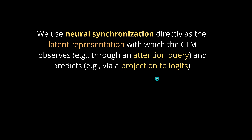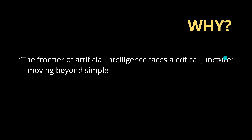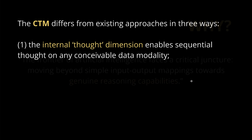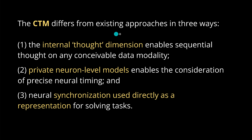Why do we need this? The authors say the frontier of AI faces a critical juncture — moving beyond simple input-output mapping toward more genuine reasoning capability. This research team claims they found a new solution. This new idea differs from existing approaches in three main ways: first, there is now an internal dimension the authors call a 'thought dimension,' which is essentially a feature dimension enabling sequential thought on any conceivable data modality.